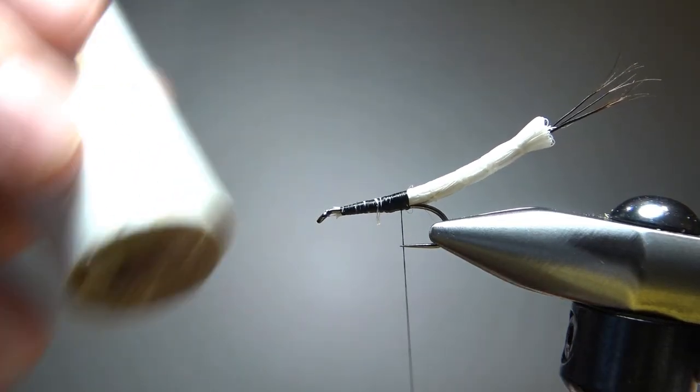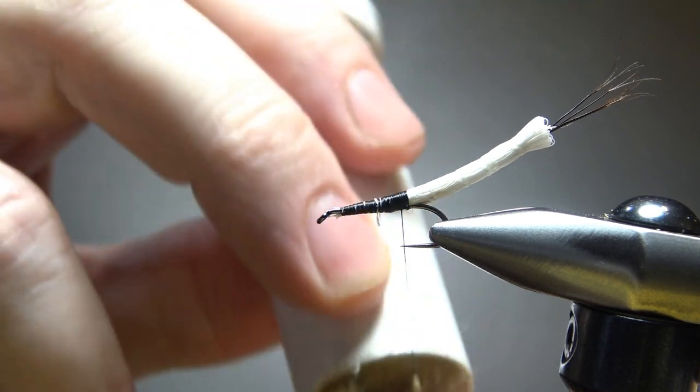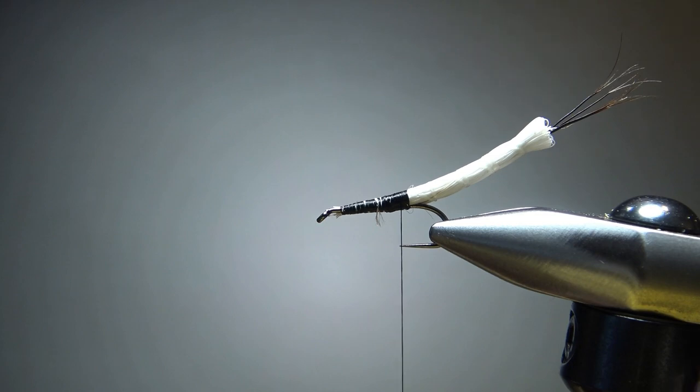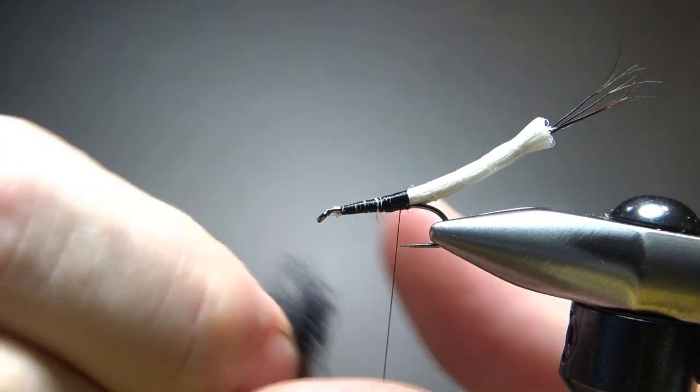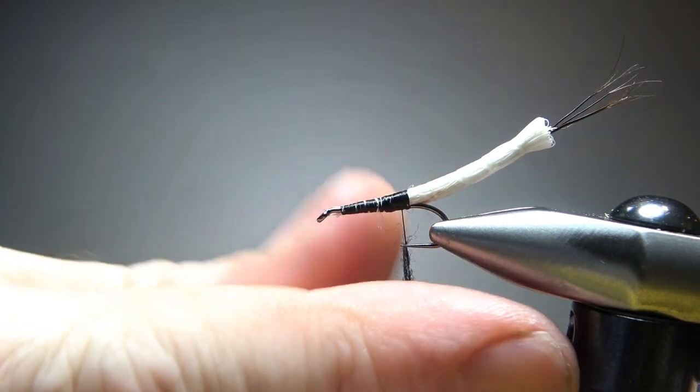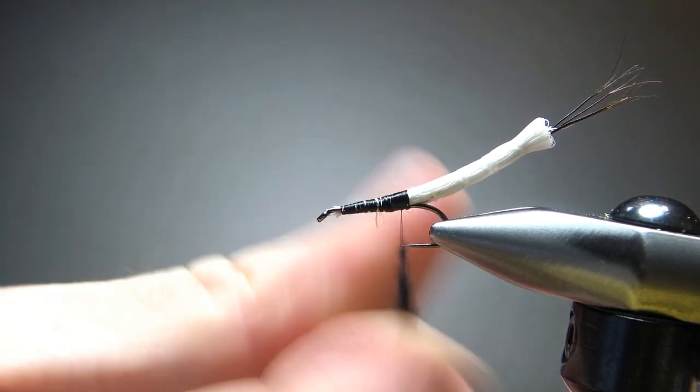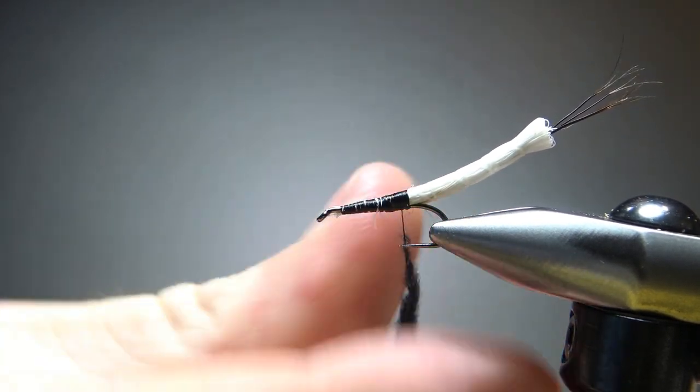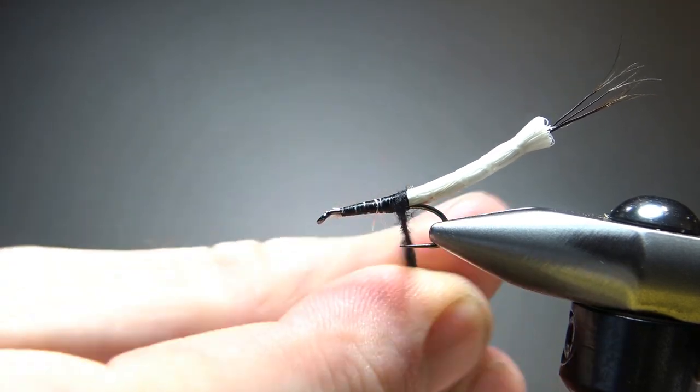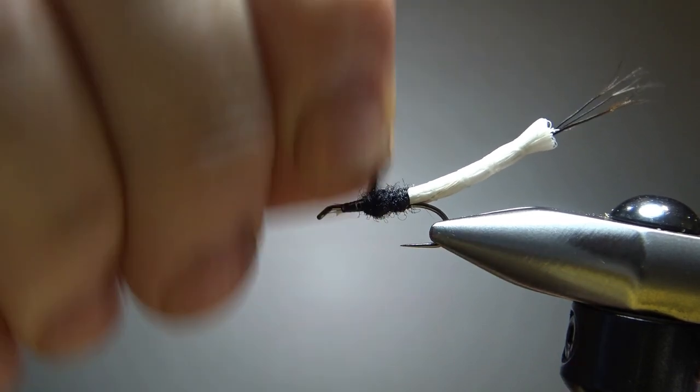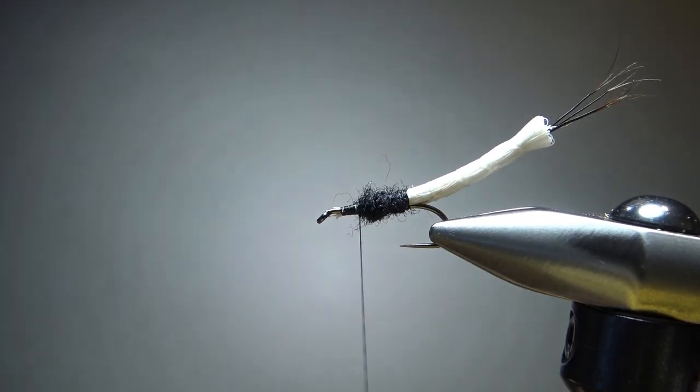I'm just going to try to smooth this out right here before I put my thorax on. The thorax is just going to be some black dry fly dubbing, some kind of synthetic. I'm going to use a black superfine, put a little bit of wax on it right there, and then just enough black dubbing to cover the rest of that body to a little bit behind the eye, where we're going to tie in some wings and a hackle. I think that is fat enough of a thorax.